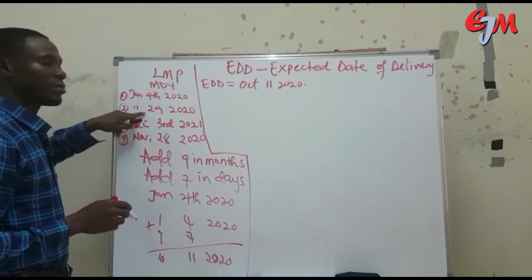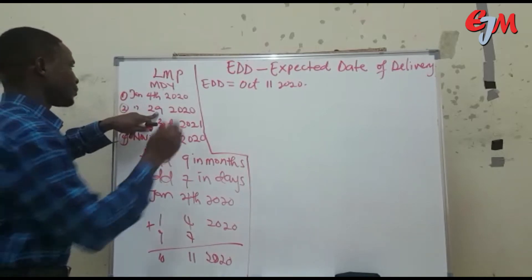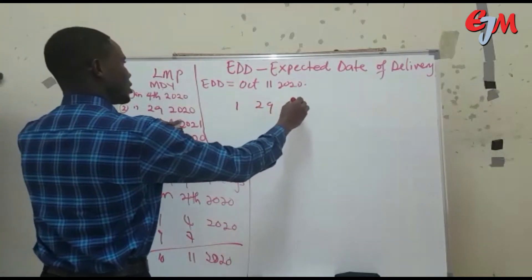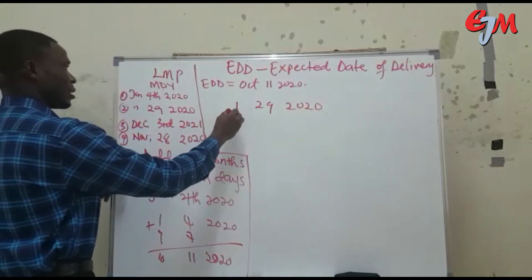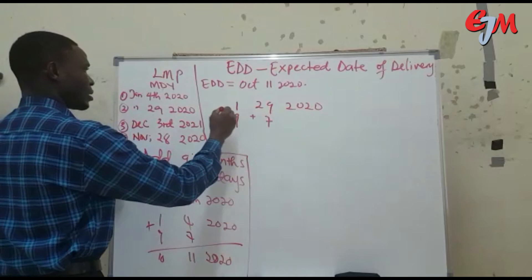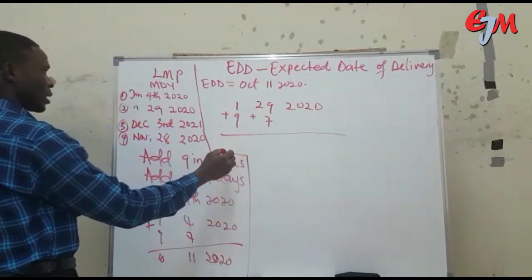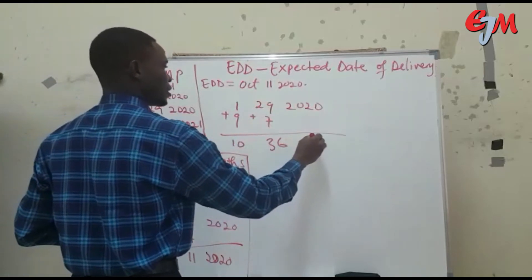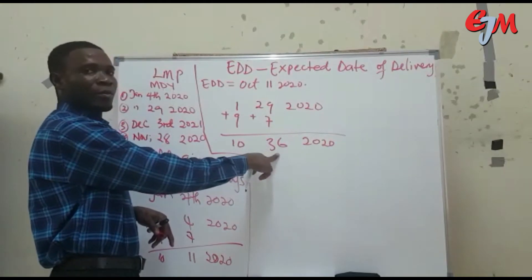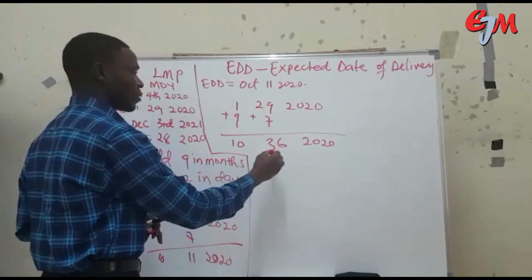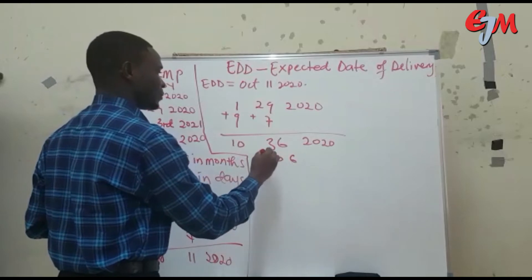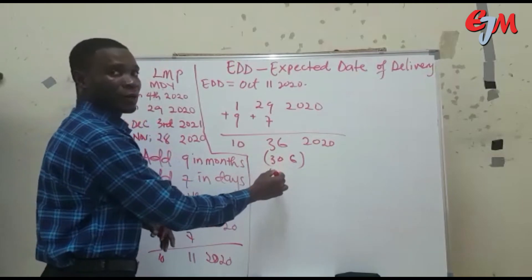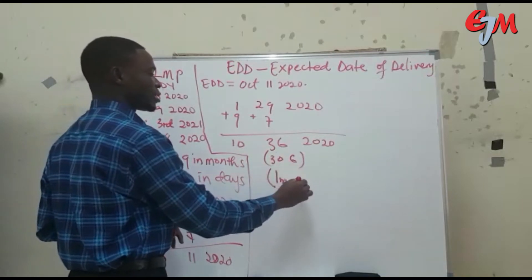For the second person, the first day of her last menstrual period was January 29th — that is month 1, day 29, year 2020. As usual, add 9 months and add 7 days. This gives you month 10, and 29 plus 7 gives you 36 for the day. Since 36 is more than a month, we split it into 30 and 6 — because 30 is 1 month and 6 is the remaining days.